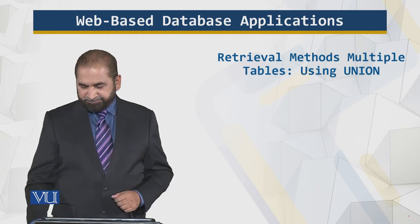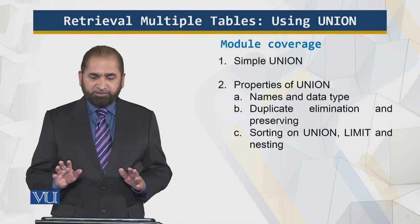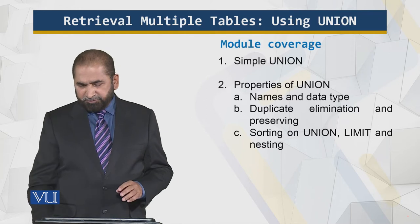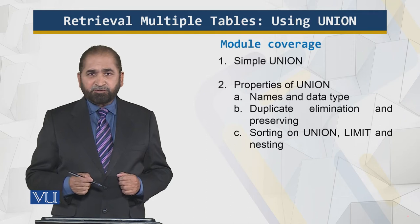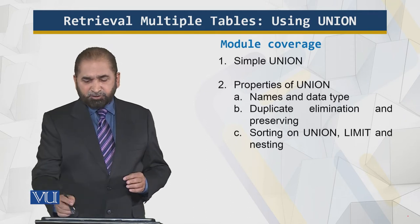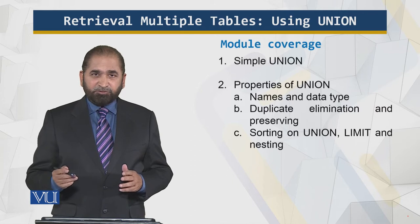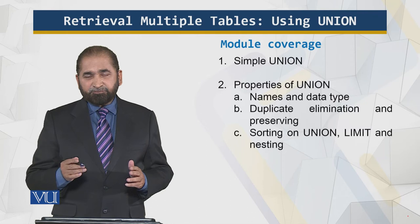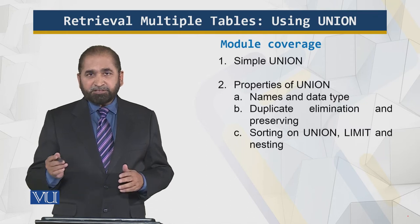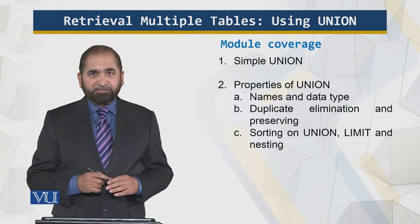We'll talk about the simple UNION, then the properties of UNION. We'll be talking about names and data types, duplicate elimination, sorting on UNION, LIMIT and nesting. There are certain properties of the UNION vis-a-vis which column was selected in the first table, which columns in the second table and so on. This will become clear as we proceed with the examples.